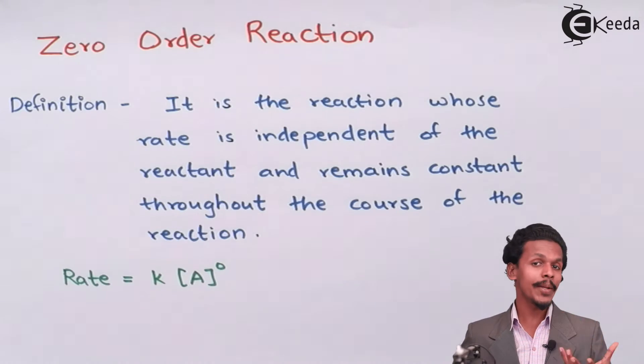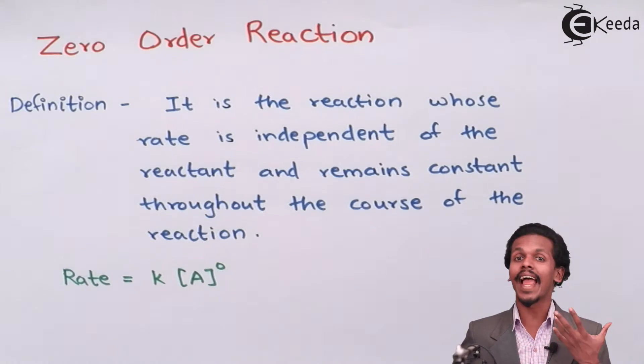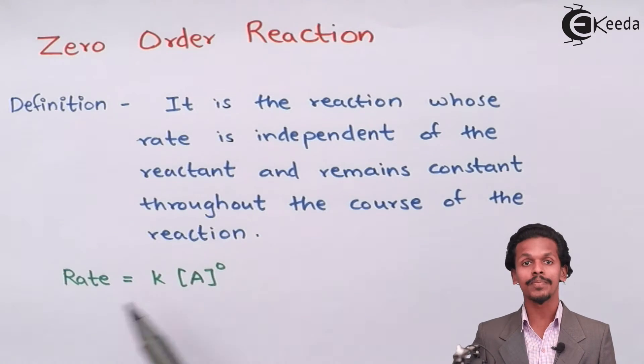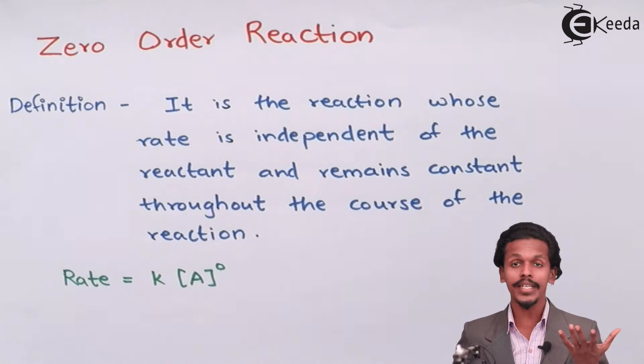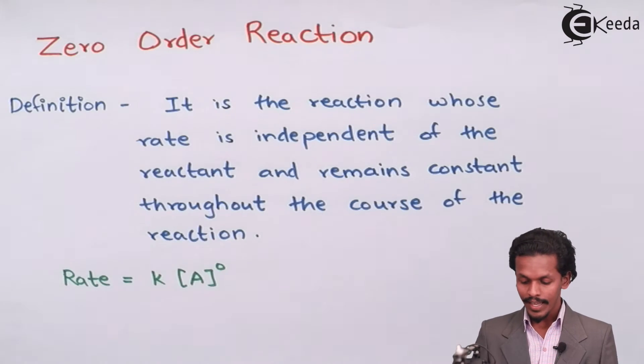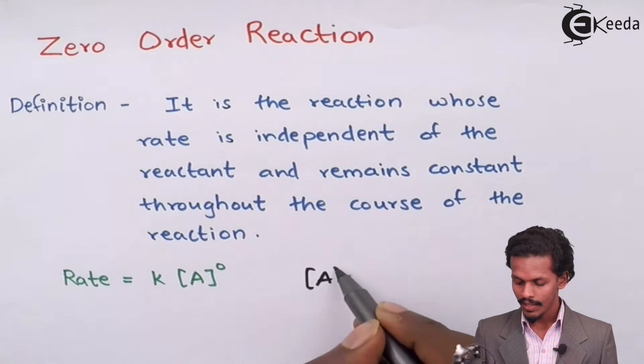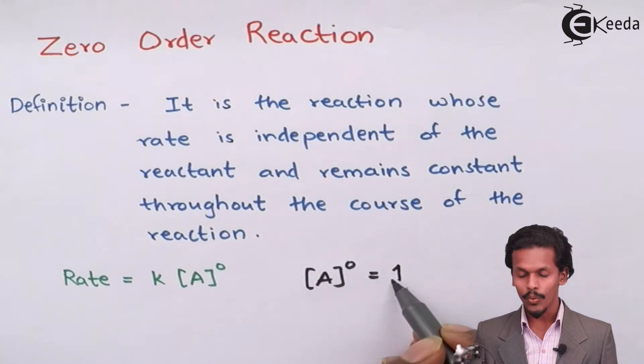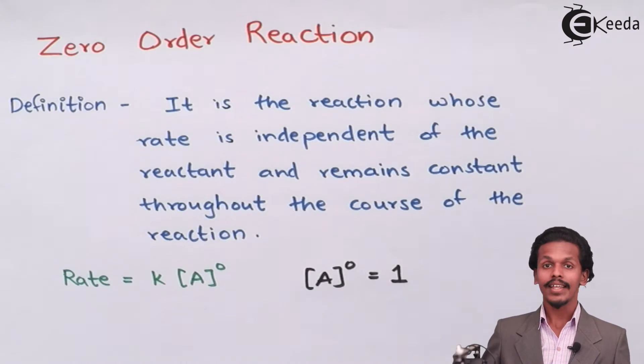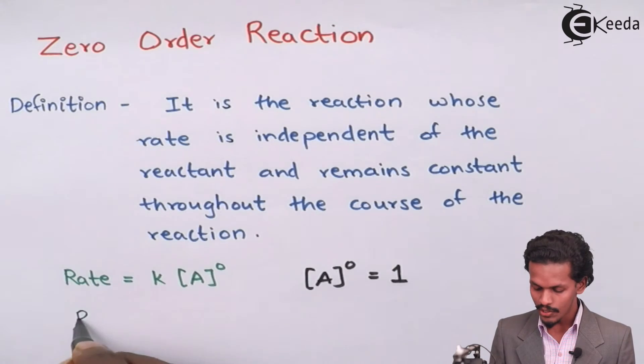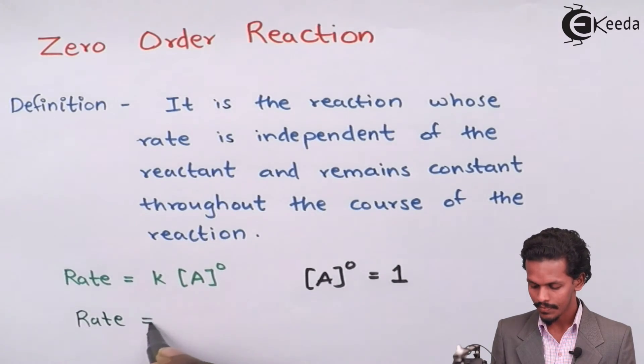It means if it is independent on the concentration of reactant then I could write the equation as rate equals k [A]^0. This equation is according to the rate law. When [A]^0, it means [A]^0 is nothing but 1. So I could write this as a final equation as rate equals k.